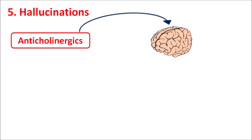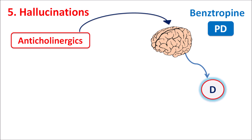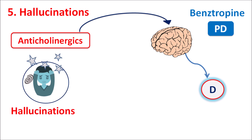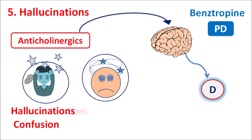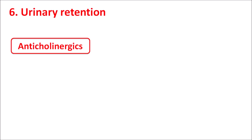The fifth side effect is hallucinations. Some anticholinergics, such as benztropine, act centrally on the nervous system to reduce symptoms of Parkinson's disease by increasing dopaminergic transmission in the CNS. However, this increased dopaminergic transmission can also produce psychotic symptoms, including hallucinations, confusion, dizziness, and drowsiness, particularly at higher doses.